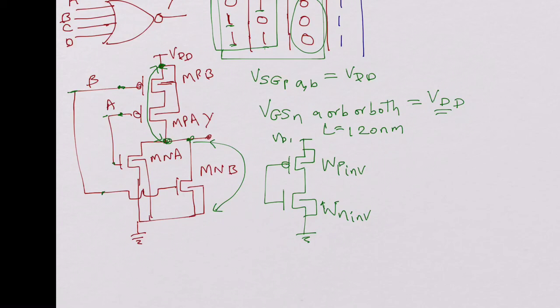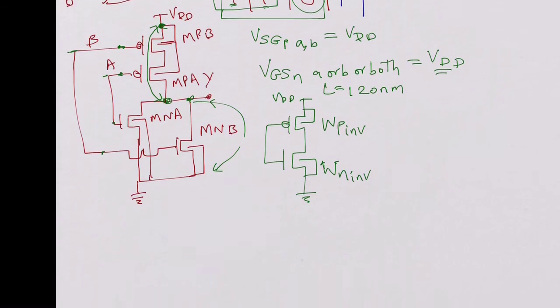Now for the NOR gate, if you look at it - for the NOR gate there are two P channels in series, MPB and MPA are in series. So what happens is WP of the NOR gate will be twice the WP of the inverter for the same sized gate.